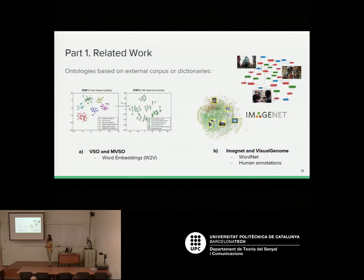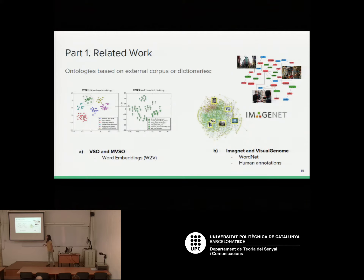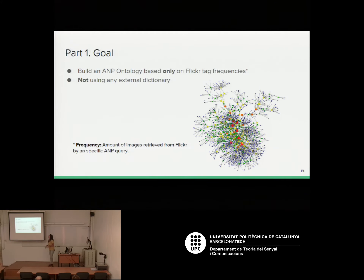Previous works on visual sentiment ontologies like BSO and MVSO have already proposed some ontologies, clustering and projecting ANPs to vectors using word embeddings — which require training on a large external corpus. Also, large dataset ontologies like ImageNet and Visual Genome use hierarchical ontologies based on WordNet, an external dictionary. The particularity of our work is that we are not going to use any external information or external dictionary — we are just going to use the tag frequencies on Flickr, meaning the number of images on Flickr for a specific ANP query.